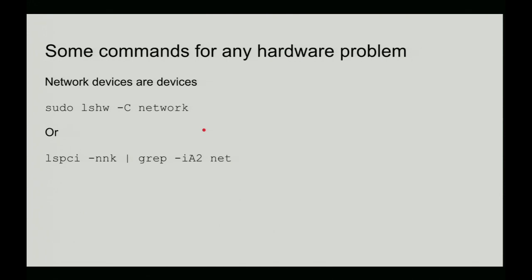Here are two commands useful for any hardware problem. The reason I bring it up is that a network device is an example of hardware. For all you know, something's going wrong with the device driver or the PCI bus is doing something wonky. You can use these two commands to troubleshoot what's going on in your computer. This is the physical level — electrons going back and forth on the PCI bus.